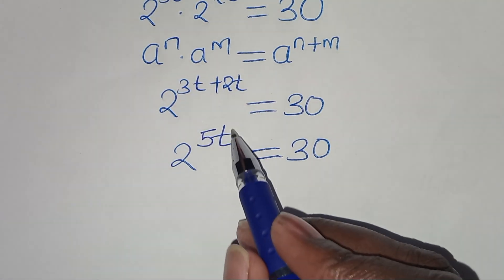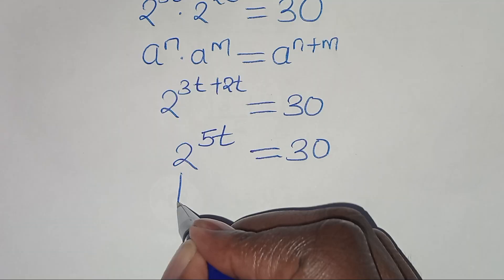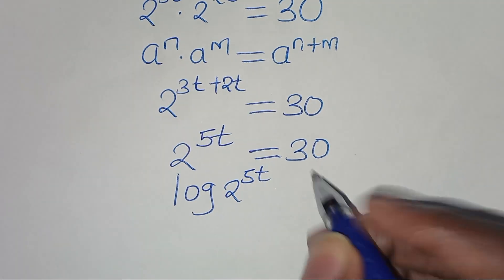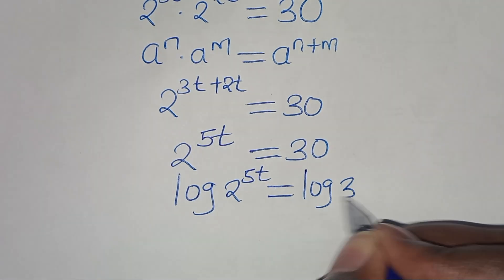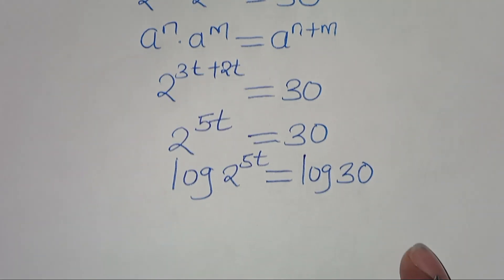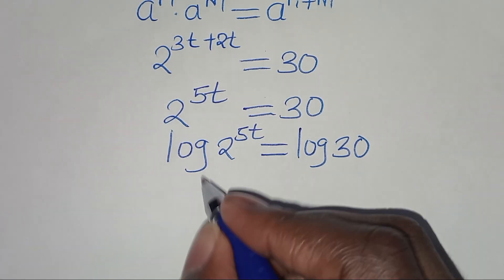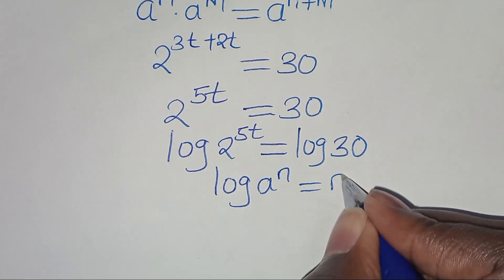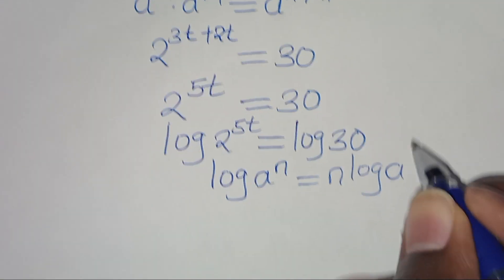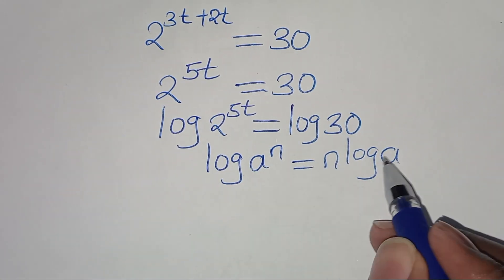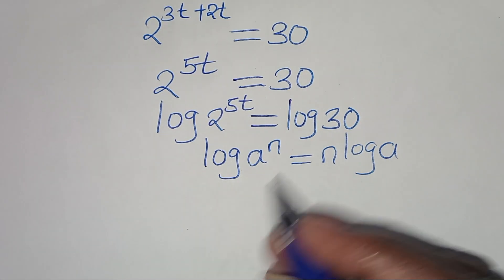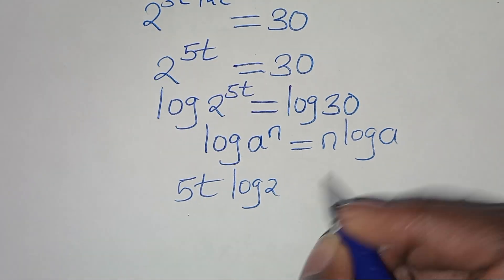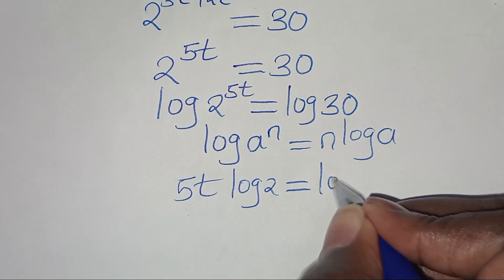The next step: to solve for t, we introduce logarithm on both sides. So we have log of 2 to the power of 5t equal to log 30. Now, log of 2 to the power of 5t is in the form log a to the power n, which we can express as n times log a. Applying this power rule, we have 5t times log 2 equal to log 30.